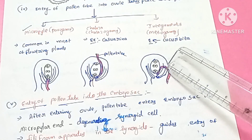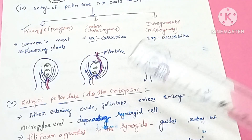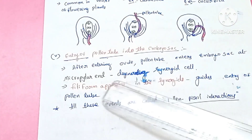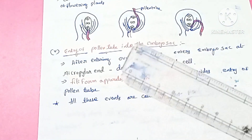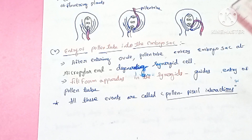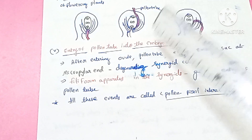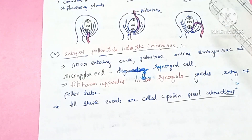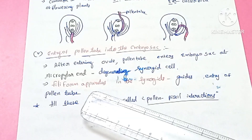These are the three ways of entry of the pollen tube into the ovule — through the micropyle (Porogamy), chalazal region (Chalazogamy), or integuments (Mesogamy). Next, the pollen tube will enter into the embryo sac from the ovule.